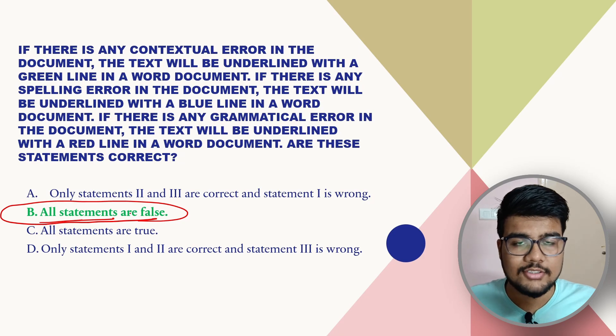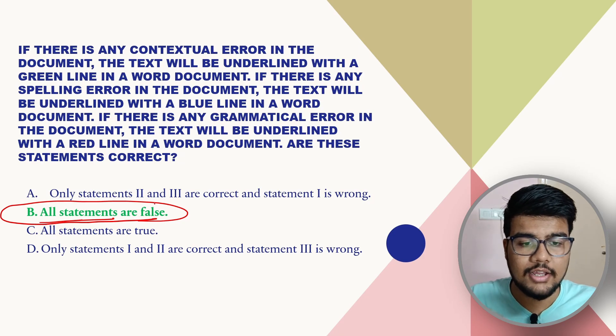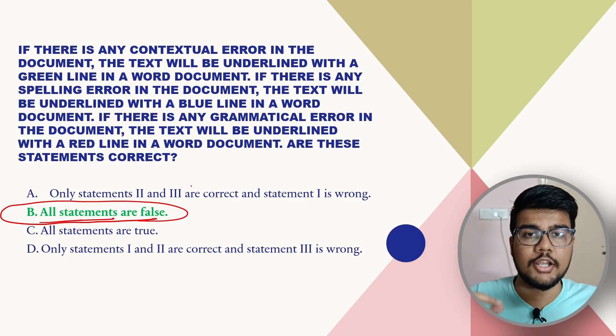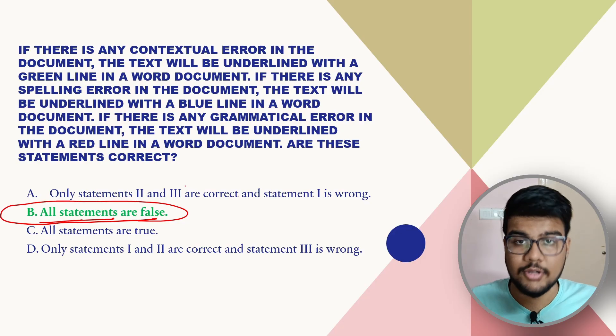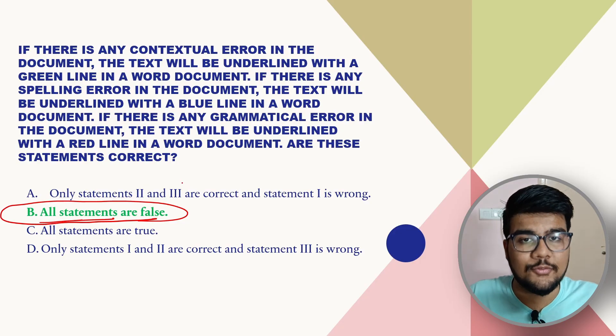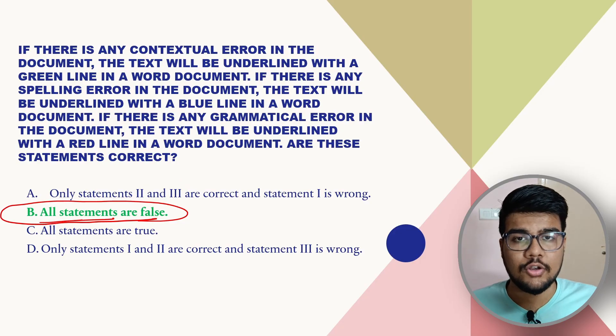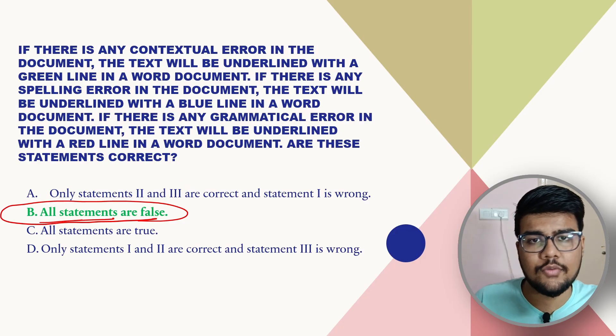To clarify: when you have a spelling mistake, the red color underline appears in Word. Make a note of this in your notebook so you can revise before sitting in your on-campus or off-campus drive.